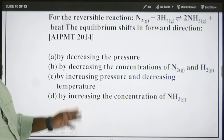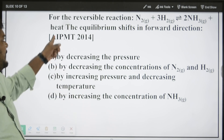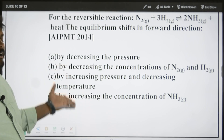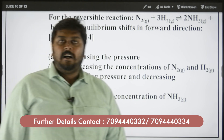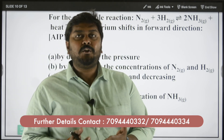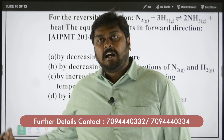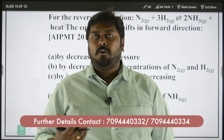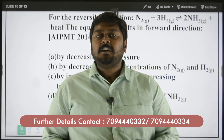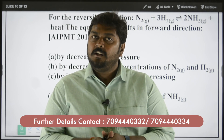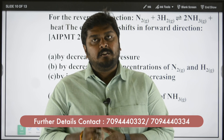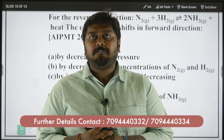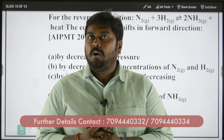Consider this equation: for the reversible reaction, the formation of ammonia plus heat — the equilibrium shifts in the forward direction. Which is the correct option? I need everyone to watch this video and give a comment, and try to answer the last question. Hope this video is useful to you — the weightage of this unit is 3 to 4 questions, sometimes minimum 2 or 3 questions. If you need further clarification, feel free to call us. Thank you.